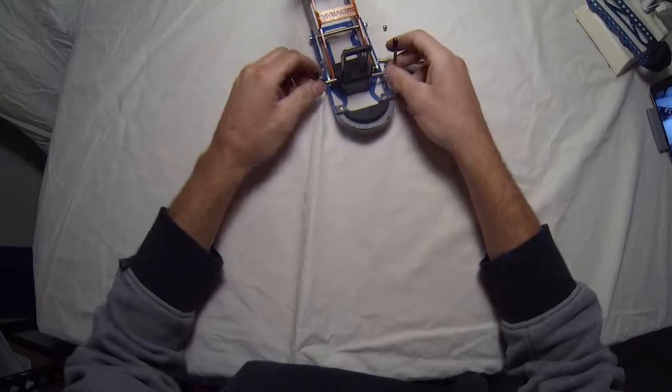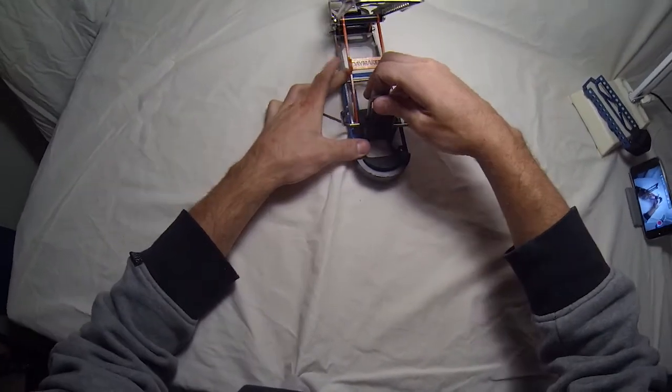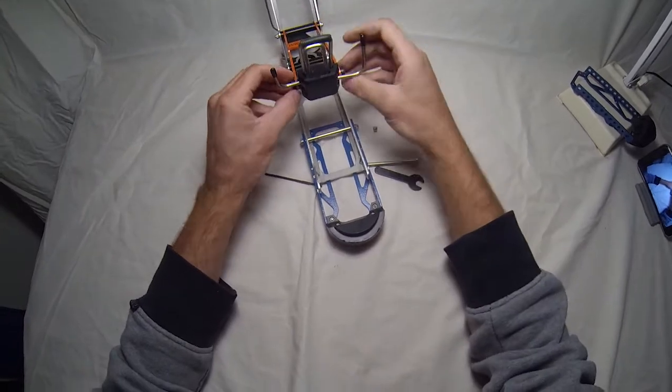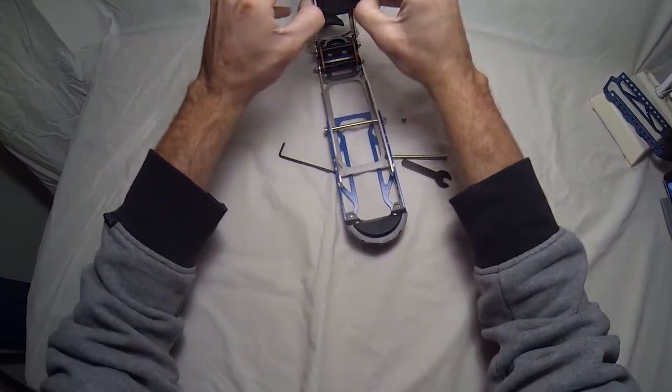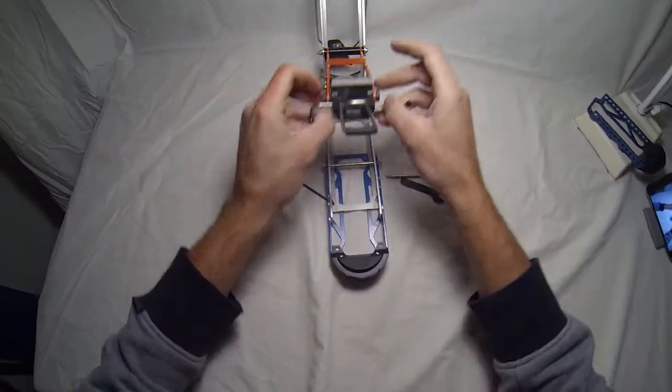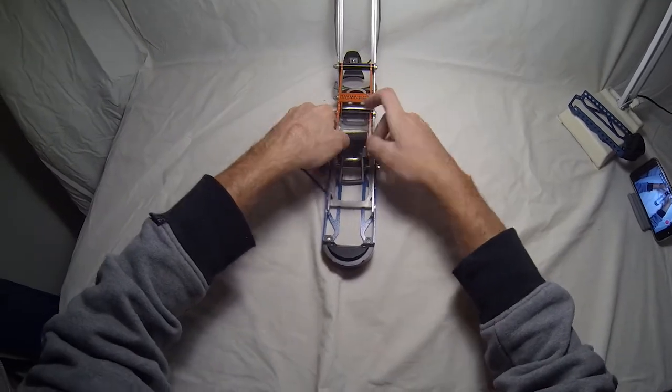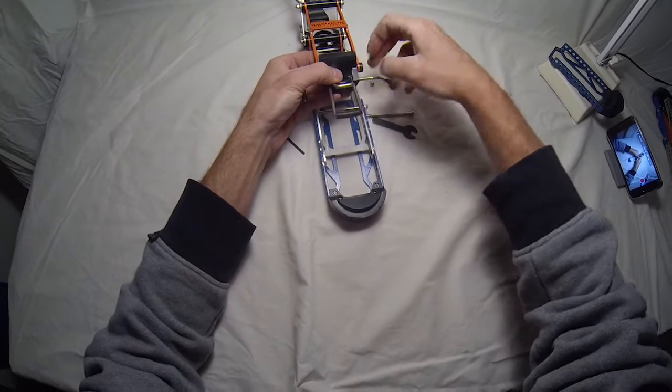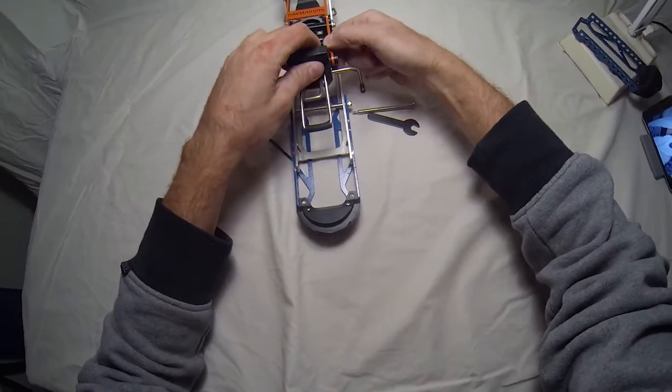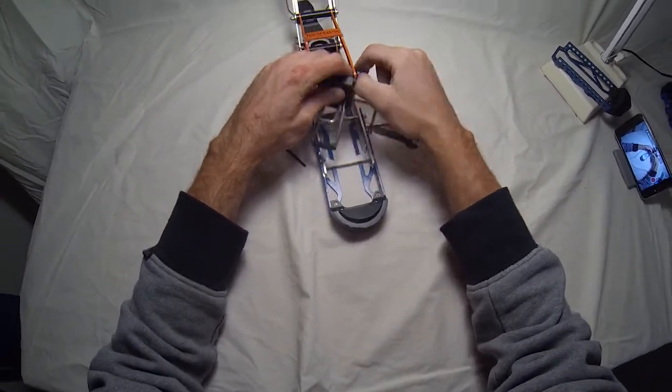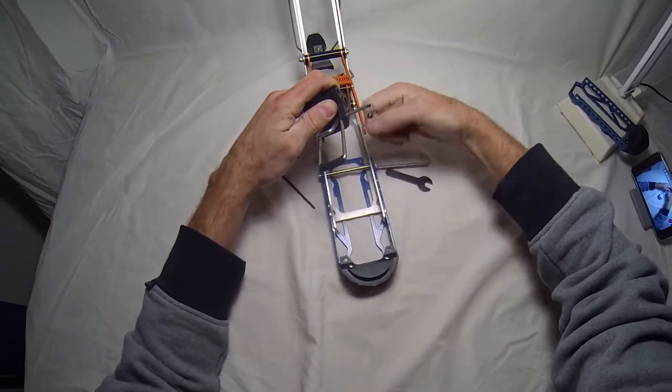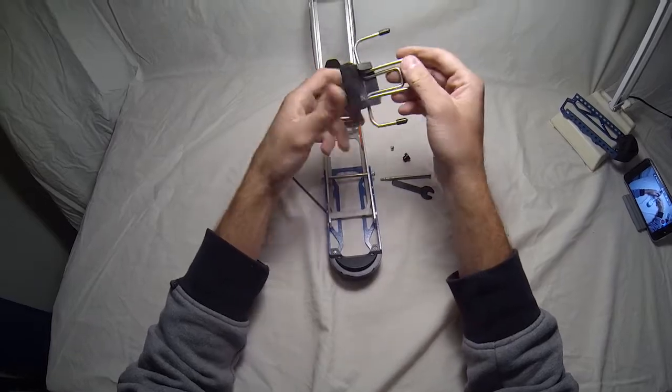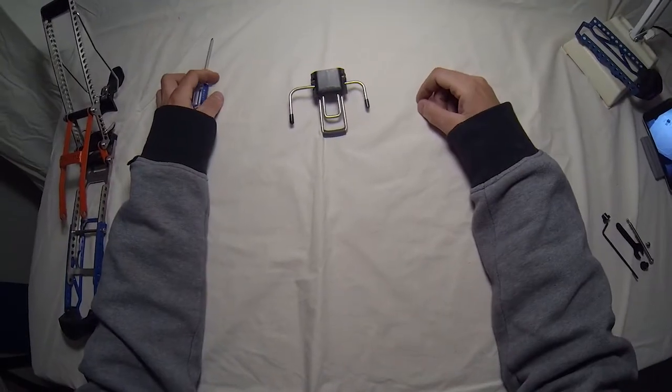Alright, so now, you want to pull up on this guy to separate it. And I'm going to pull out these bushings to free up the elevator block. Alright, here we go.